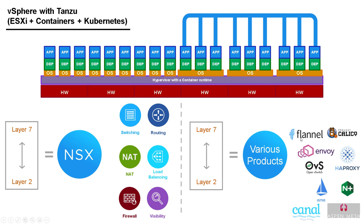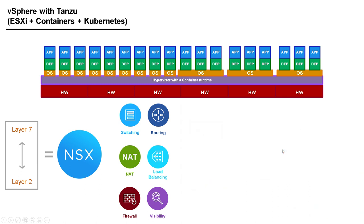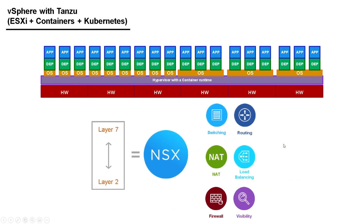One of the things we talk about with NSX is that instead of having all these different products doing all those layer two to layer seven services, we can get rid of that network around the back, get rid of all those products, and do all the layer two to layer seven services for both virtual machines and containers with one product — NSX. We can do switching, routing, NAT, load balancing, firewall, and visibility exactly the same way as we do for virtual machines. Most importantly, we can see what's going on and secure it.